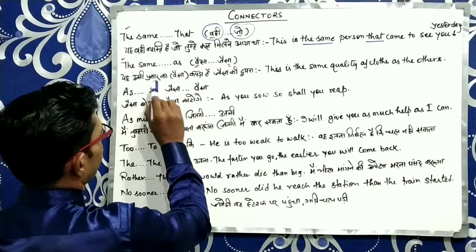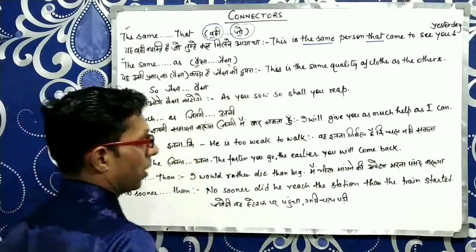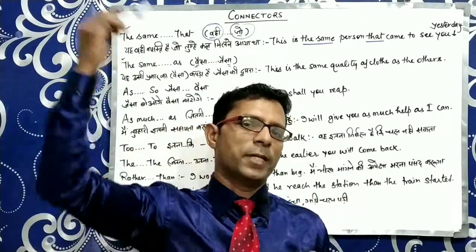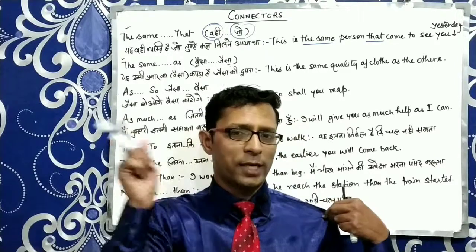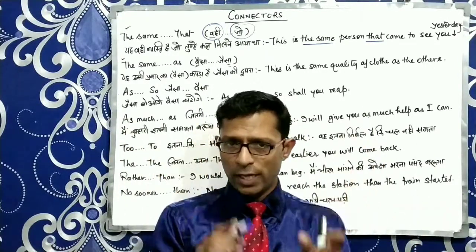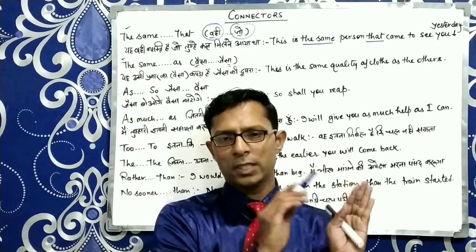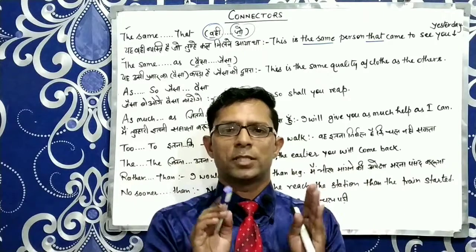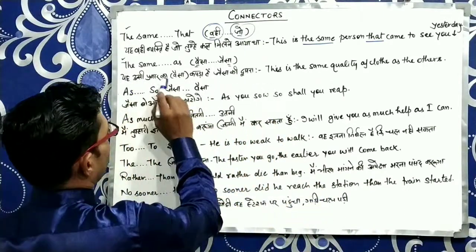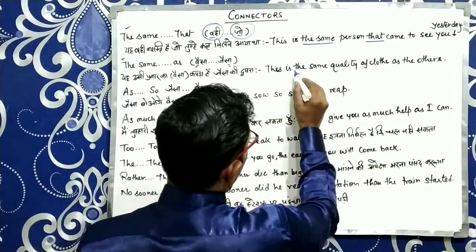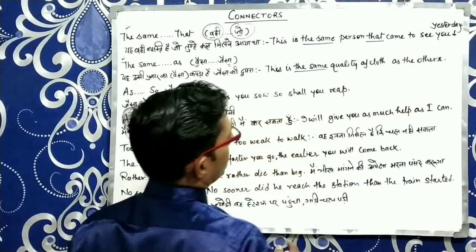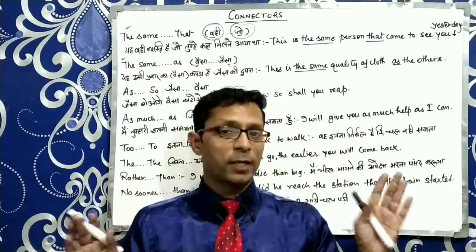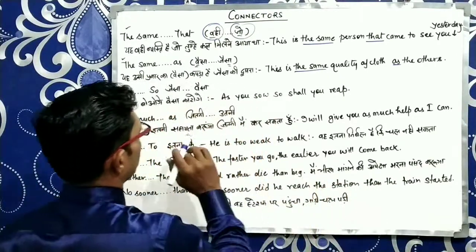Example لیتے ہیں The Same As کا: یہ ویسا ہی کپڑا ہے جیسا کی دوسرا. مان لیجیے یہ بلو شرٹ ہے — یہ وہ شرٹ نہیں ہے جو دکان پر دیکھی، لیکن اس کے جیسی ہے. This is the same quality of clothes as the others. تو جب ایک جیسی دکھنے والی چیز یا شخص کی بات ہو تو The Same As کا پریوگ کریں. یہ بہت بڑا difference ہے جو آپ کو سمجھ میں آنا چاہیے.